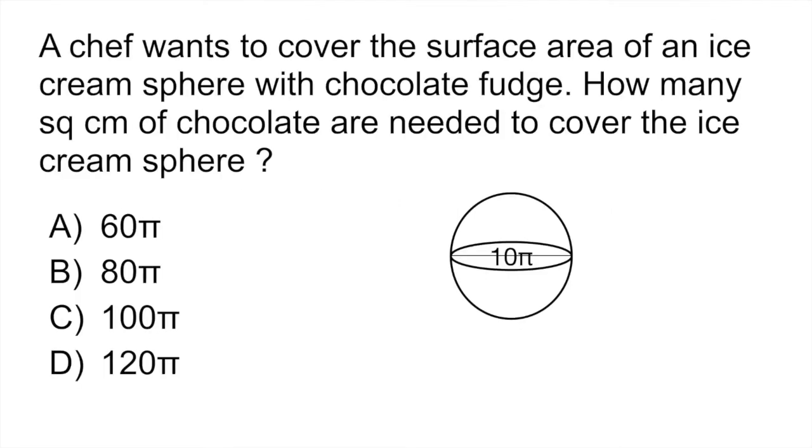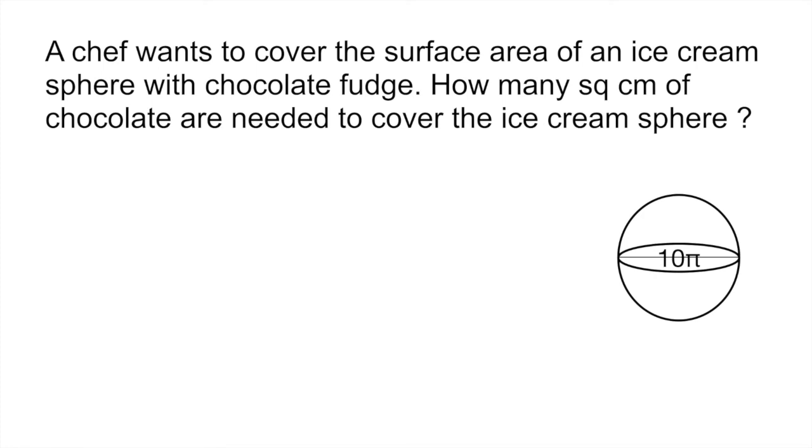Our final question is a geometry question. A chef wants to cover the surface area of an ice cream sphere with chocolate fudge. How many square centimeters of chocolate are needed to cover the ice cream sphere? So with the geometry, remember that they actually give you all the formulas that you need, so you don't have to memorize anything. But you do have to be familiar with these problems, so that you don't miss out on points that could be easy. The first thing that we have to do is figure out our diameter and our radius. And our diameter would be 10, and the radius is half of the diameter, so it would be 5.